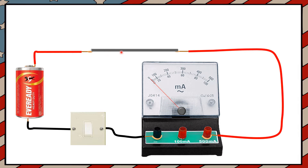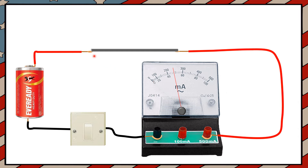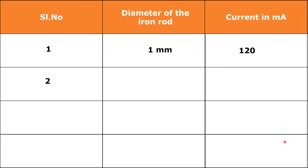In the next case, I am going to place an iron rod of diameter 2 mm. Turn the switch on and see how much current is flowing. This time, more current is flowing — it is 240 milliamperes when an iron rod of 2 mm diameter is placed in this gap. Let us note down these values: 2 mm diameter iron rod and current flowing in the circuit is 240 milliamperes.